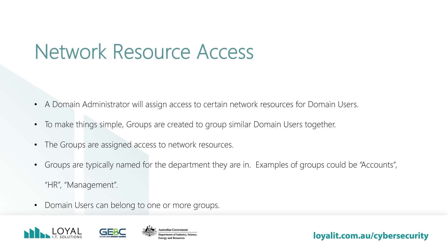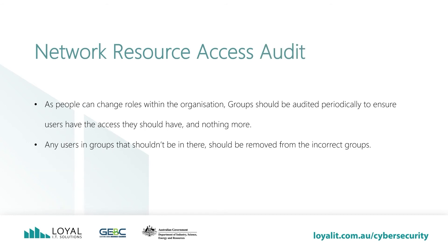Network resource access means accessing other network devices to use the service it offers — this can be shared documents, printers or the internet. A domain administrator will assign access to certain network resources for domain users. To make things simple, groups are created to group similar domain users together, and these groups are assigned access to network resources. Groups are typically named for the department they are in — examples could be Accounts, HR or Management. Users can belong to one or more groups. As people change roles within the organization, groups should be audited periodically to ensure users have the access they should have and nothing more. In order to conform to the Essential Eight's Maturity Model Level 3, these should be audited no less than annually, and any users in groups that shouldn't be there should be removed.